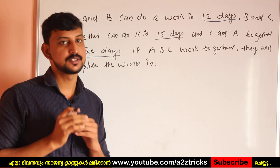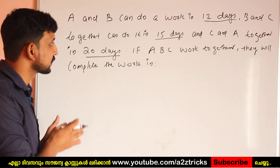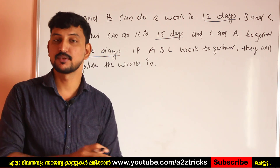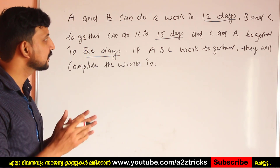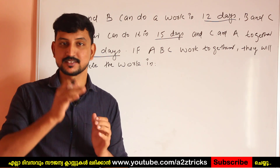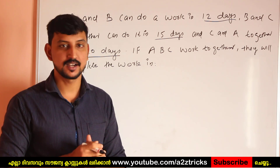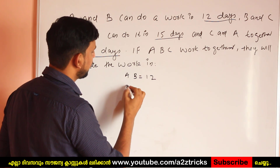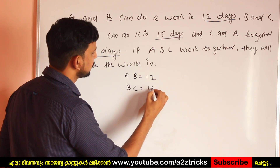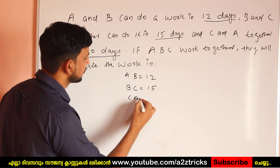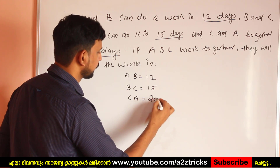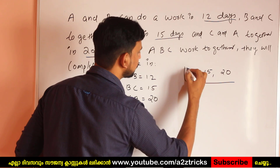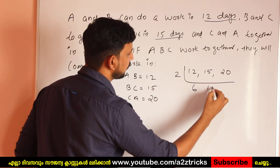A and B can do it in 12 days, B and C in 15 days, and C and A in 20 days. We will solve this using the LCM method. Taking the LCM of 12, 15, and 20, we can find the total work and then calculate the combined efficiency.